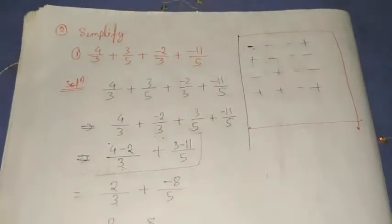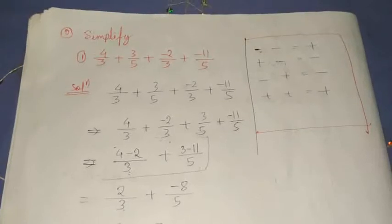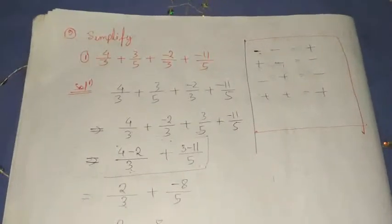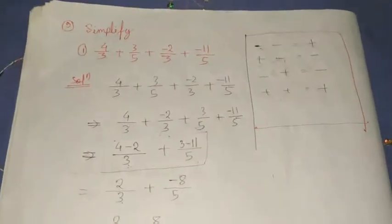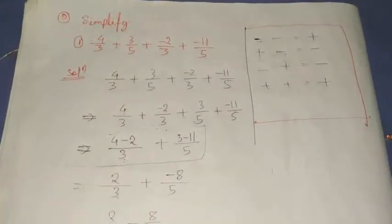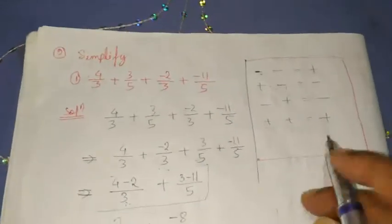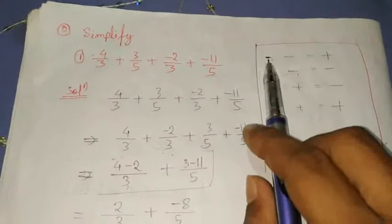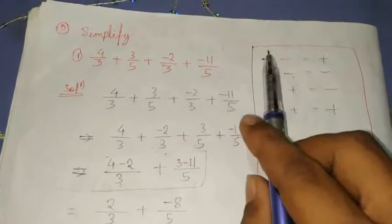Hello students. In this video I am going to talk about simplification of rational numbers. As you know, the number which is in the form of p by q, where q is not equal to 0 and p and q are integers, this number is called a rational number. Let's know about signs and how they work.